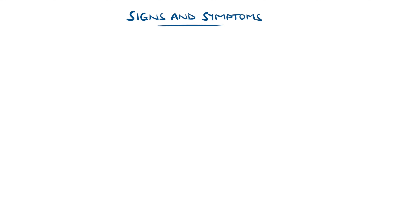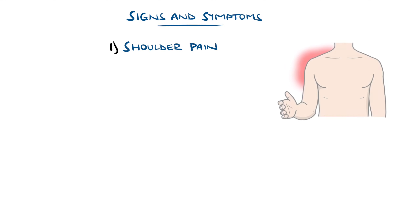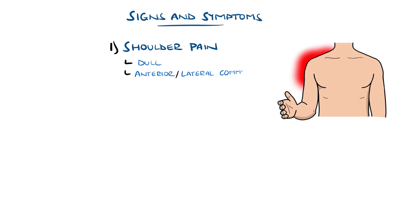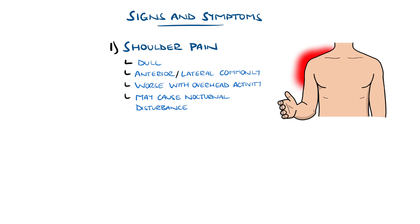Common features of rotator cuff tendinopathy or tears include shoulder pain, often described as a dull pain found in the anterior or lateral aspect of the shoulder that is worse with overhead activity and also can be worse at night when lying on the affected shoulder.